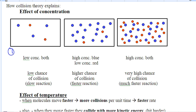So, in box number one, we have a low concentration of both, which means a low chance of collision, which is a slow reaction.